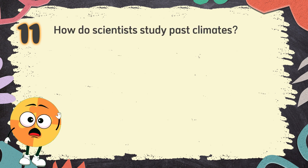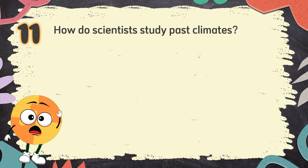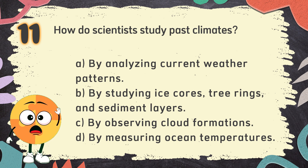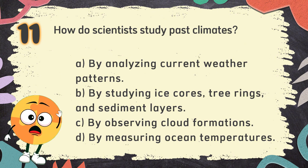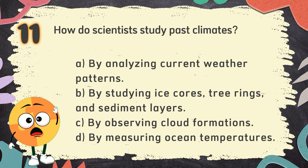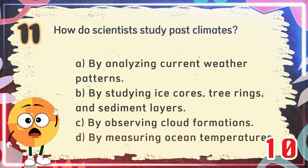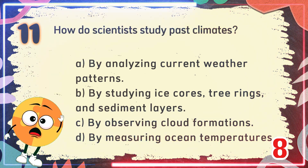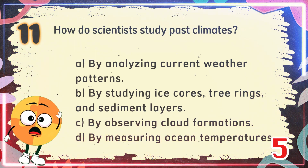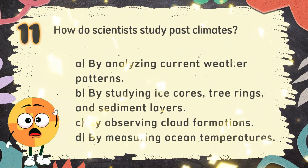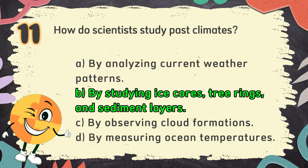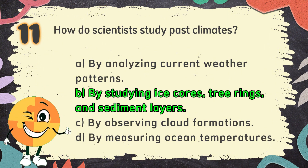Number 11. How do scientists study past climates? The choices are: A. By analyzing current weather patterns. B. By studying ice cores, tree rings, and sediment layers. C. By observing cloud formations. D. By measuring ocean temperatures. The correct answer is B: by studying ice cores, tree rings, and sediment layers.